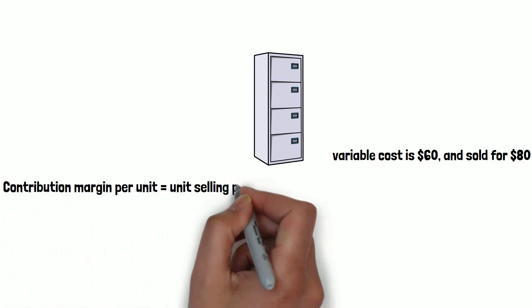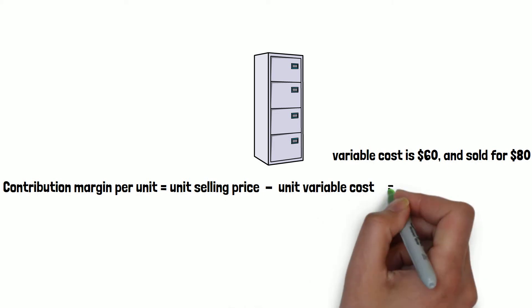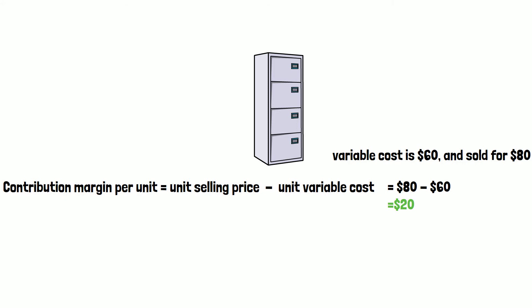The contribution margin per unit is calculated by taking the difference between the two. The selling price minus the variable cost. So $80 minus $60, that's $20.